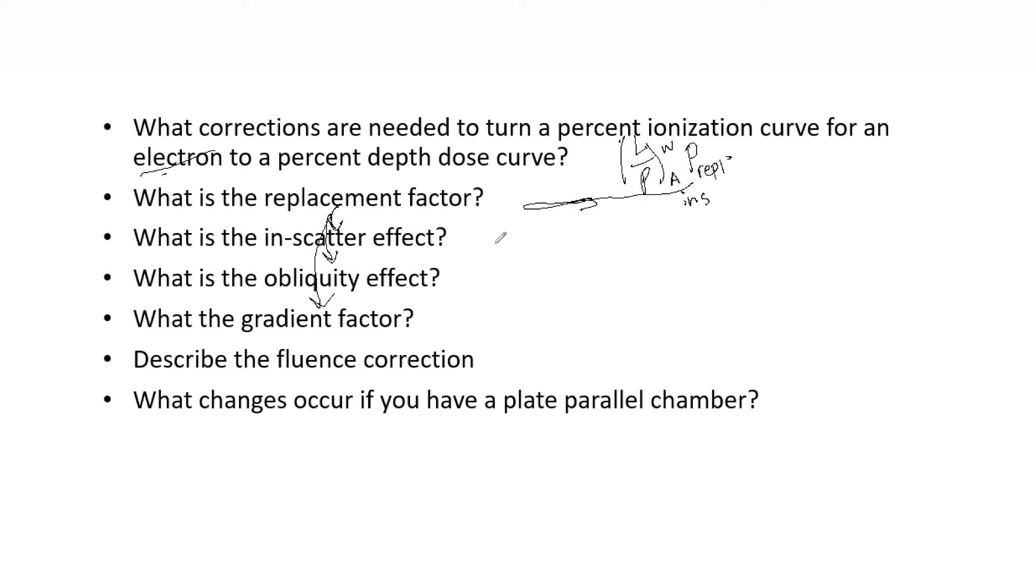First, what is the in-scatter effect? Essentially it increases the electron fluence in the chamber cavity because the electrons scattering out of the air cavity are less than expected in intact medium. It essentially increases the fluence, which ultimately will increase your dose. You need to take into account the in-scatter effect.